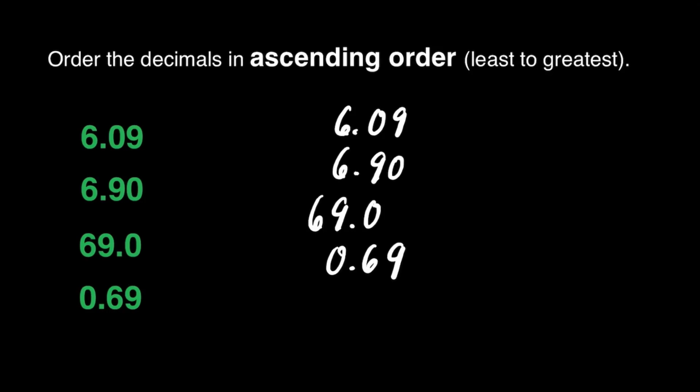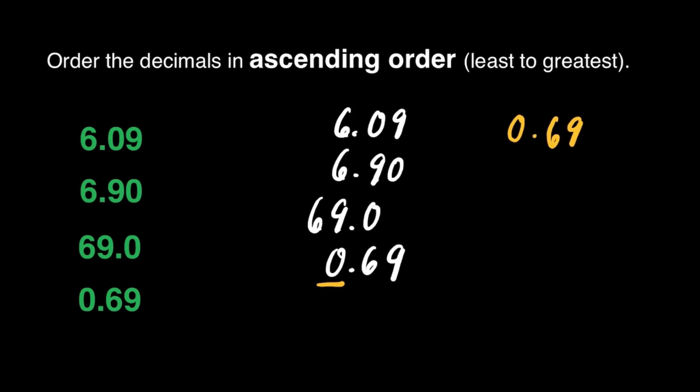Now let's compare the whole number part. Which among these four decimals has the least value? That is 0, so 0.69 will be first. Now we have to choose between the first and second decimal. Since they have the same value in the whole number part, let's compare the digits in the tenths place. The first decimal has 0 and the other has 9. So we'll write 6 and 9 hundredths first, followed by 6 and 90 hundredths, and the last will be 69.0.